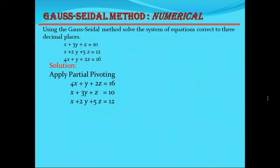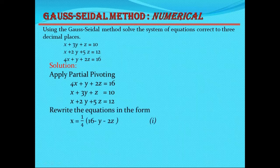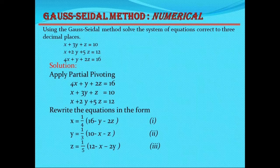To get the solution, we first need to convert the equations in terms of X, Y, and Z simultaneously. Equation 1 will be written in the form of X, equation 2 will be written in the form of Y, and equation 3 will be written in the form of Z. So we will get these three equations.